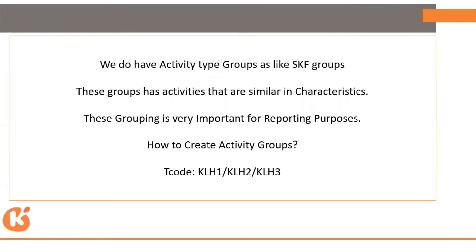We also have activity type groups, similar to statistical key figure groups, where we group all similar activities under one category. These groups have similar characteristics and are very important for reporting purposes. The transaction code for activity type groups is KLH1 for creation, KLH2 for change, and KLH3 for display.